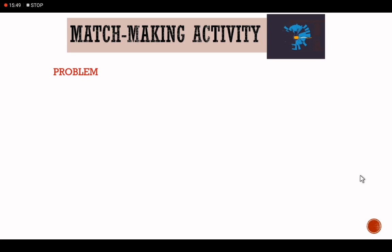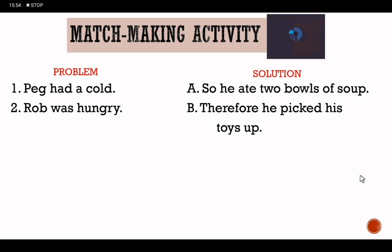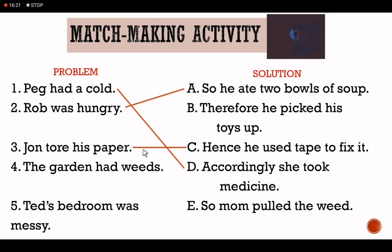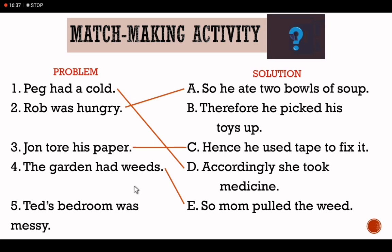Let's have a matching activity — match the problem to its solution. Number 1: Problem: 'Peg had a cold.' Solution: 'Accordingly, she took medicine.' Number 2: Problem: 'Rob was hungry.' Solution: 'So he ate two bowls of soup.' Number 3: Problem: 'John tore his paper.' Solution: 'Hence he used tape to fix it.' Number 4: Problem: 'The garden had weeds.' Solution: 'So mom pulled the weeds.' Number 5: Problem: 'Ted's bedroom was messy.' Solution: 'Therefore he picked his toys off the floor.' That is how the problem-solution pattern can be used for idea development.